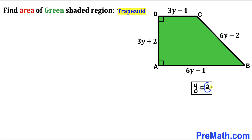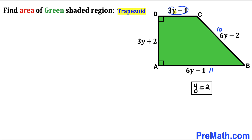With Y equals 2, let's compute each side length. BC: 6(2) minus 2 equals 10. AB: 6(2) minus 1 equals 11. CD: 3(2) minus 1 equals 5. AD: 3(2) plus 2 equals 8. So our four side lengths are 11, 10, 5, and 8.